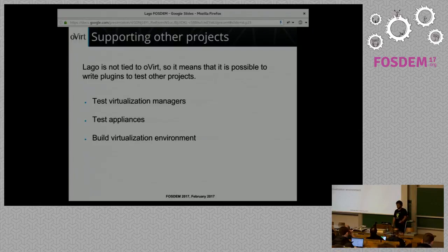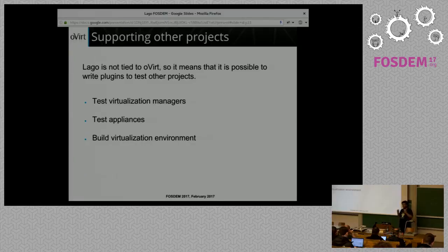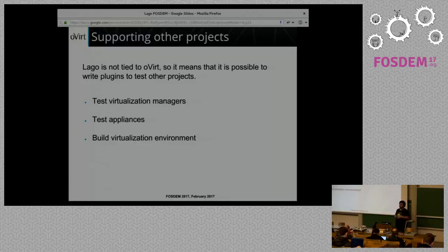An important point of this talk is to show that this is not just for oVirt. We want this to be used by other people, and the tool was created to be as agnostic as possible from the start. This is why there is no oVirt-specific code in the core of LAGO. It can be used for several purposes: testing other virtualization managers, testing appliances, or doing end-to-end testing on software running as a virtual machine - all possible with LAGO by writing plugins.